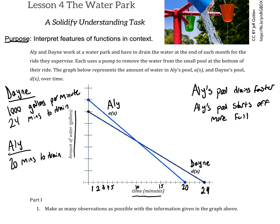So, if Dane's pool takes 24 minutes to drain, and it's doing 1,000 gallons per minute, we can use some critical thinking to discover that it's going to be 24,000 gallons of water that he started with in his pool.